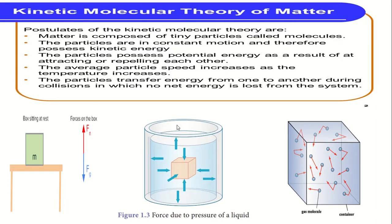Now I will explain kinetic molecular theory of matter. There are some postulates of kinetic molecular theory of matter. Matter is composed of tiny particles called molecules. The particles are in constant motion and therefore possess kinetic energy. The particles possess potential energy as a result of attractive or repulsive force. The average particle speed increases as the temperature increases. The particles transfer energy from one to another during collision in which no net energy is lost from the system.